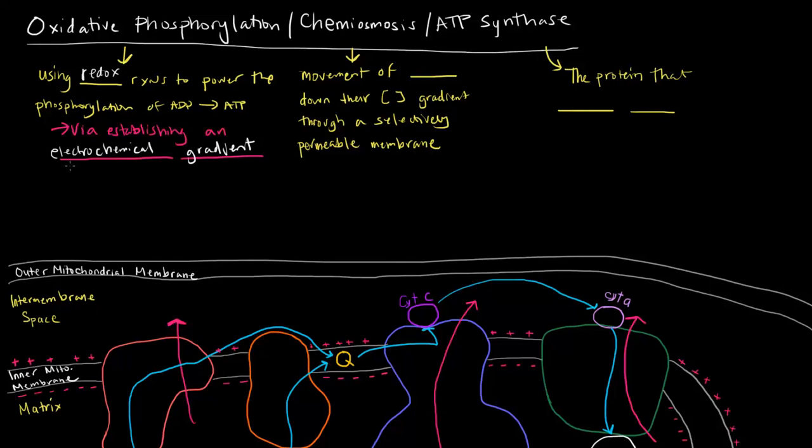But now, in the case of H pluses, those are protons, they're charged, they have a positive charge. So there's an electrical gradient as well, which is described as a voltage, there's a difference in charge, there's a charge separation. So that's another aspect of the gradient itself.